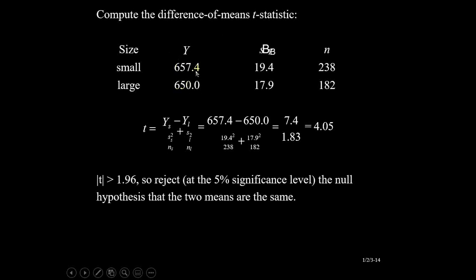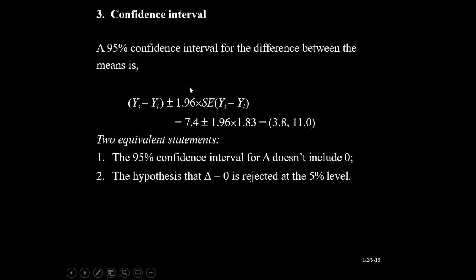We have established through this data that, in general, small class size has higher test scores than large class size. The confidence interval is: difference of 7.4 plus or minus 1.96 times the standard error, giving a range of 3.8 to 11. So the test score difference will be between 3.8 and 11. Zero is not covered in this interval. Since the null hypothesis was that the difference equals zero, and zero is not covered, we reject the null. So we have two consistent ways: T-value greater than 1.96, and zero not in the confidence interval.